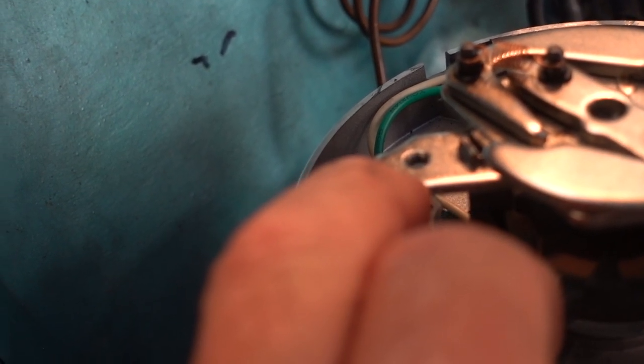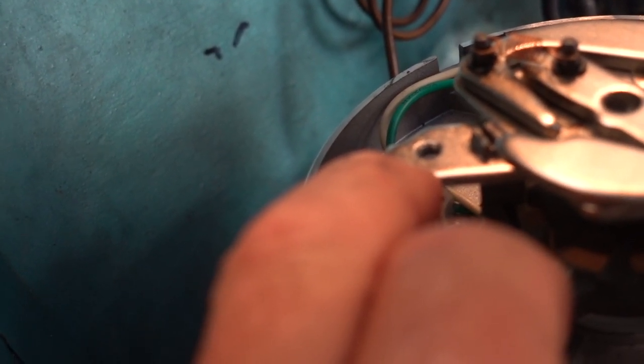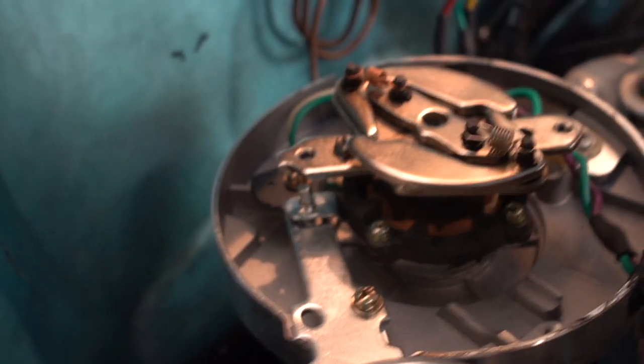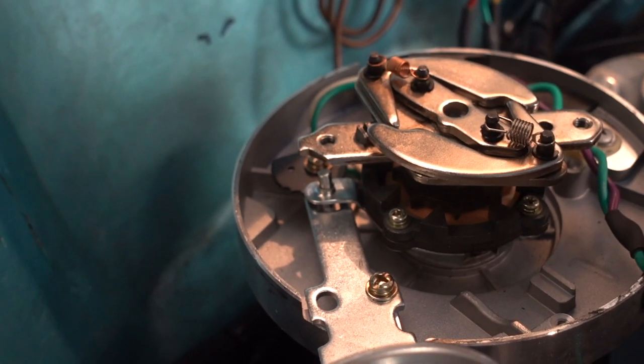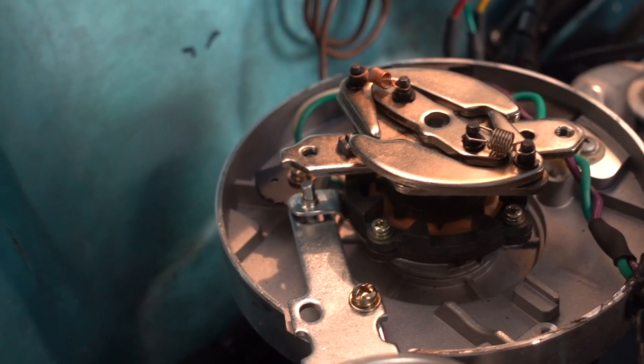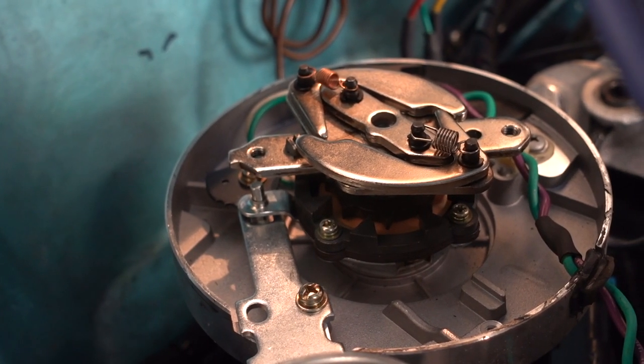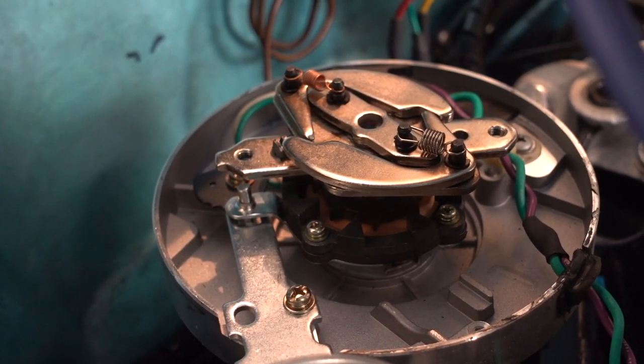So if I cut this screw back maybe 30 thousandths, I would pick up another two degrees of advance, or if the screw was a little bit bigger, I'd have a little less advance. So that's how you restrict the advance in a GM HEI distributor. It's pretty easy, and I'll dig out a box here that's got one of these cut-off screws in it, so you can see what it looks like.